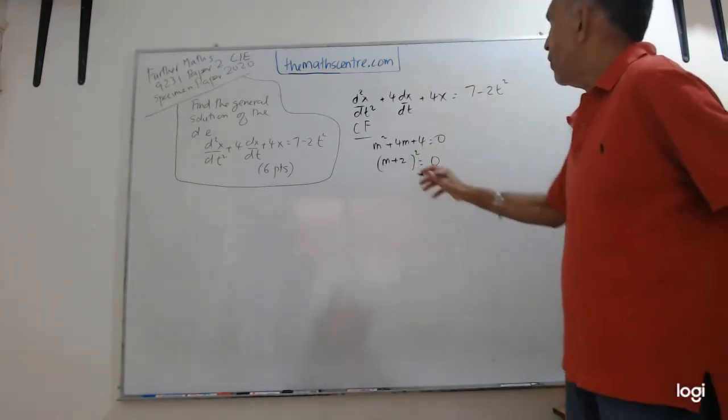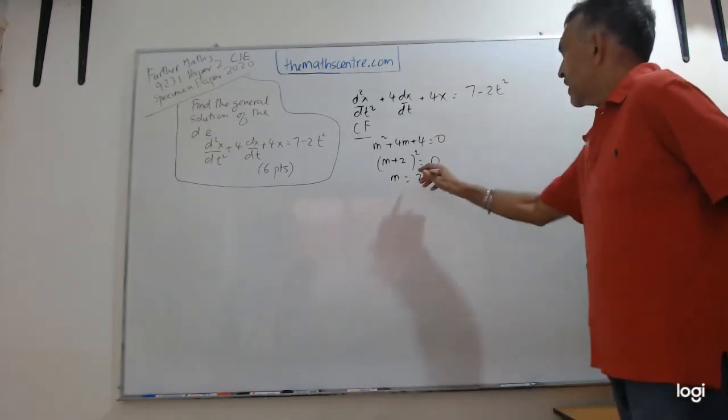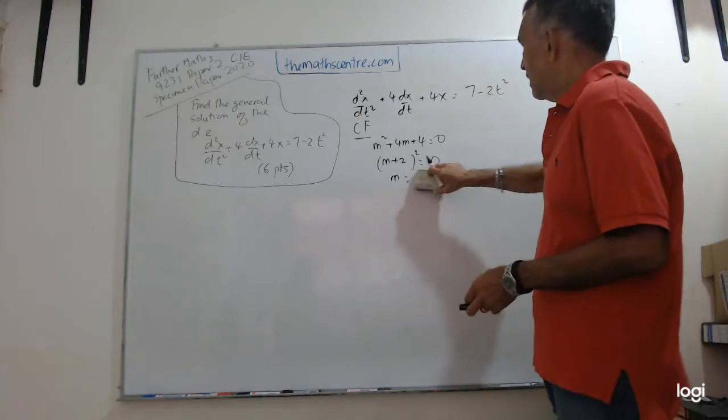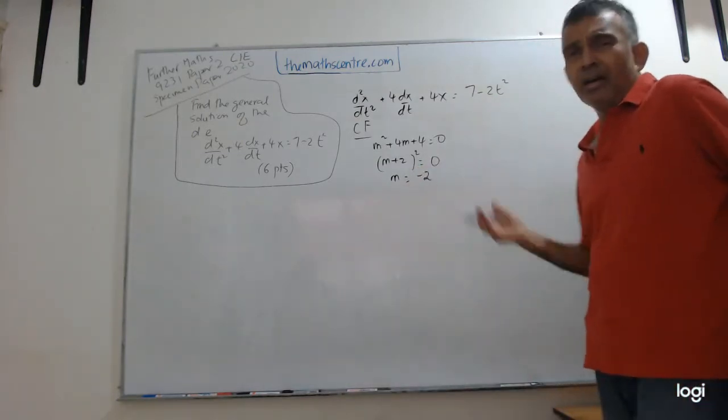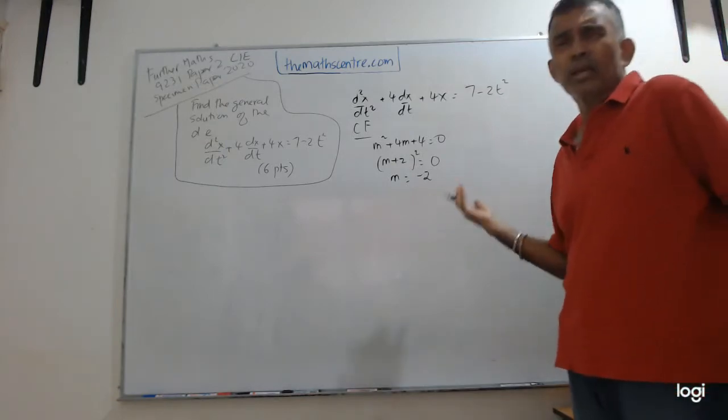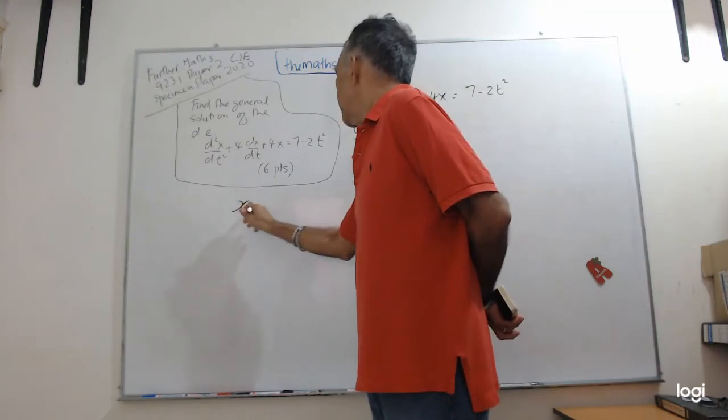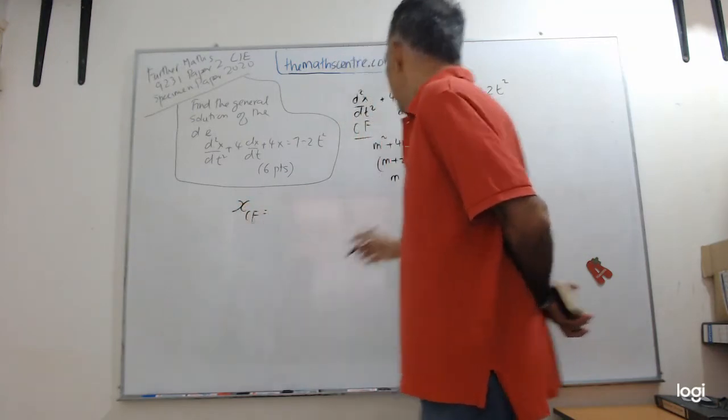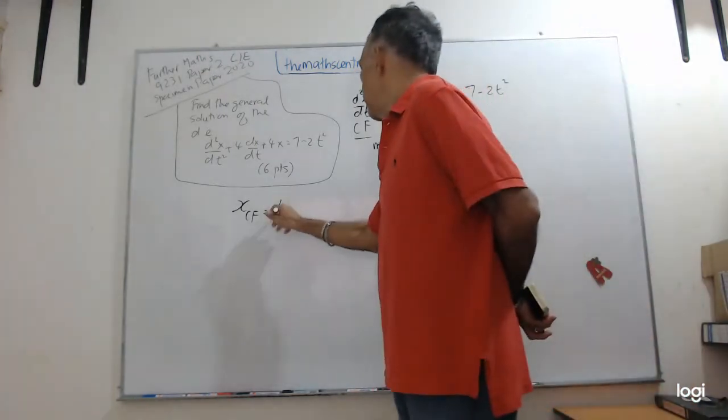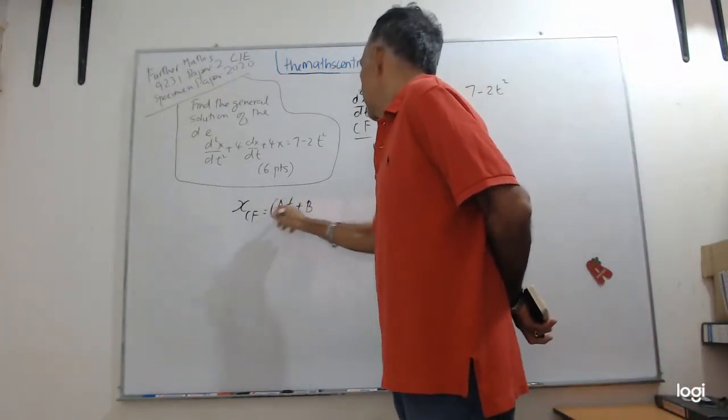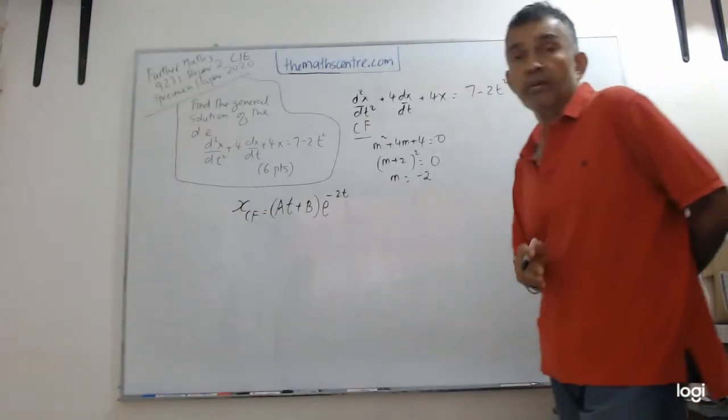Therefore M = -2. Let me write my complementary function here. Because this is a repeated root, it will be (At + B)e^(-2t). That's the thing we learn in our classes from the textbook.